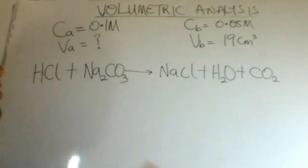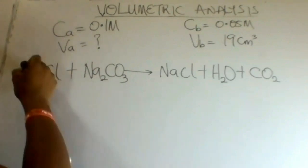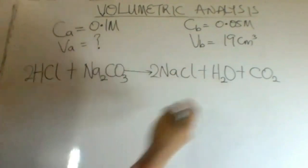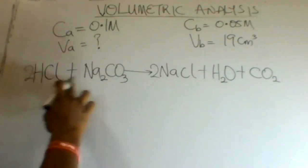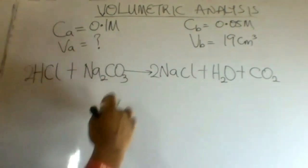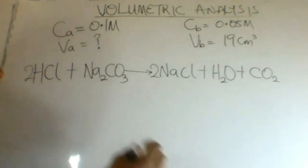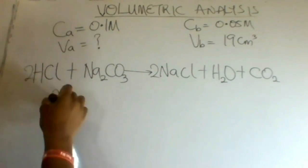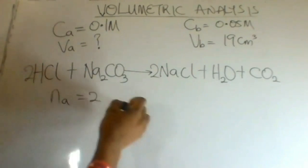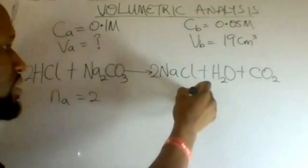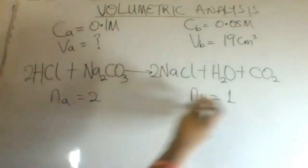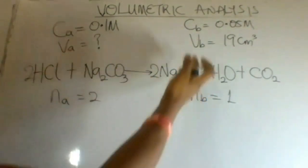If we balance this out, we have two HCl and two NaCl — two moles of acid and one mole of base. This simply means that the number of moles for the acid is 2, while the number of moles for the base is 1. In this case, the base is sodium carbonate.